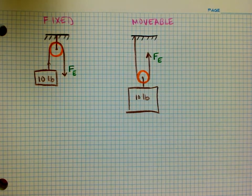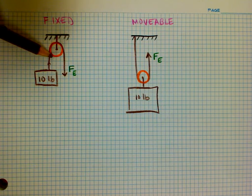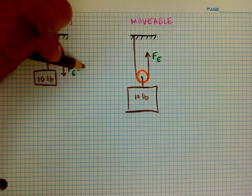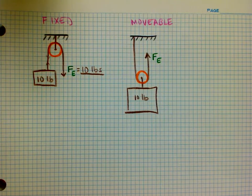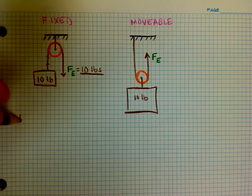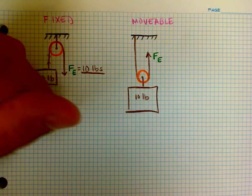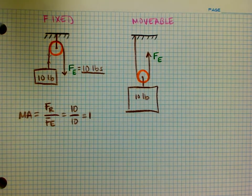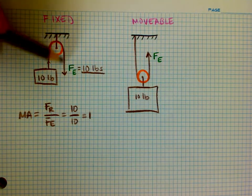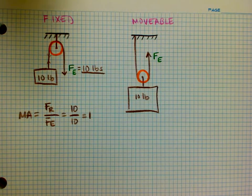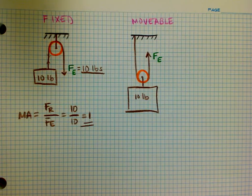As I pull downward, this rope has to provide 10 pounds of upward force, which means the tension on the rope is the same everywhere. I've got 10 pounds of downward force here, and that means I still have to provide 10 pounds of effort force in order to lift this object off the ground. When calculating mechanical advantage — force out over force in — it's 10 over 10, so the mechanical advantage is one. One foot down on this rope equals one foot up on the other side.